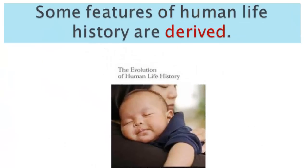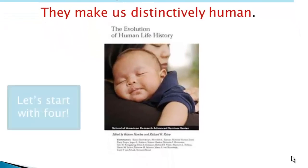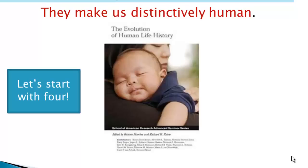Some features of human life history are derived or evolved and represent a distinctive evolutionary course — these are part of what make us distinctively human. We're going to look at four of these that are discussed in a book called 'The Evolution of Life History,' edited by Kristen Hawkes.